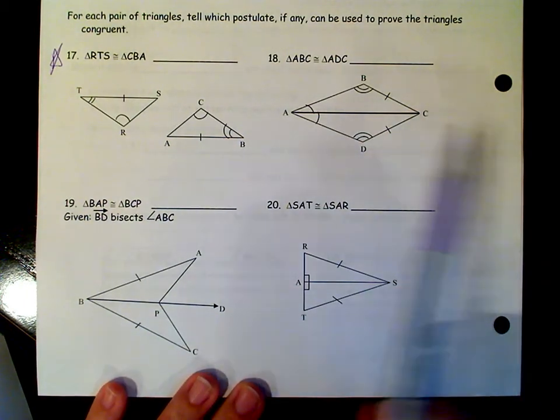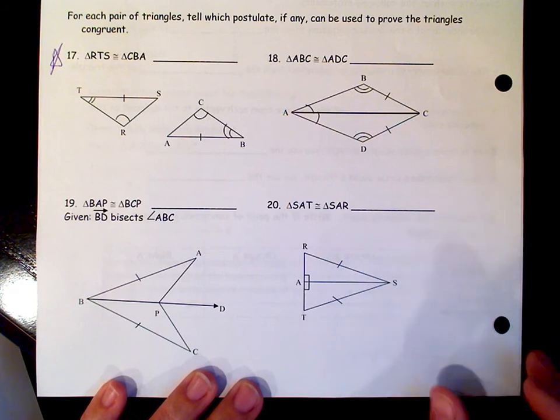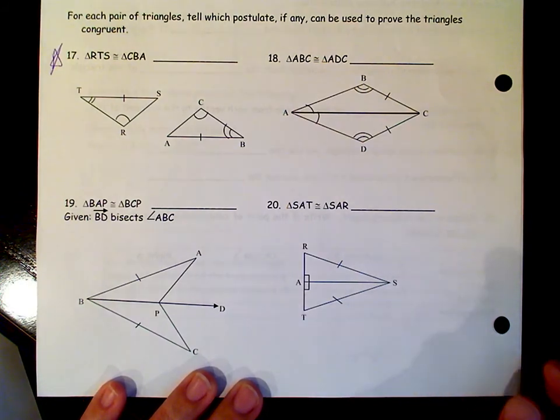For 17 through 20, the directions say for each pair of triangles, tell which postulate, if any, can be used to prove that the triangles are congruent.